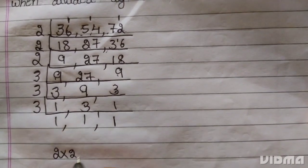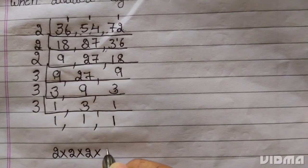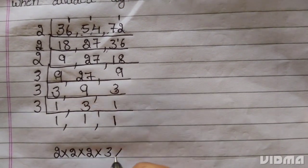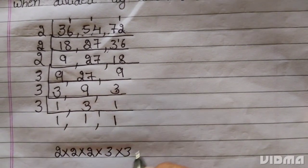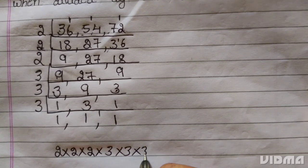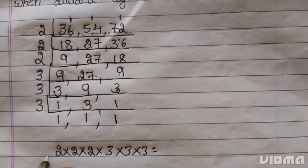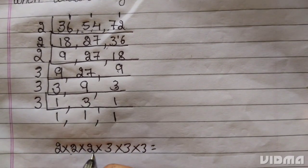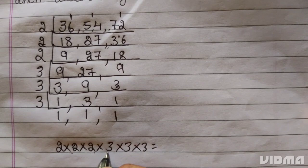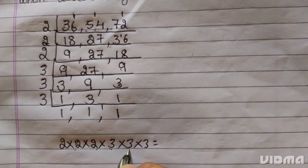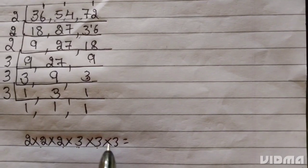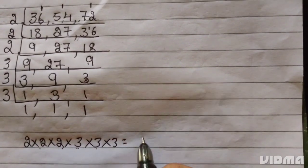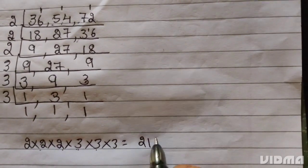2 multiply, 2 multiply, 2 multiply, 3 multiply, 3 multiply, 3 multiply, 3. 2 twos are 4, 4 twos are 8, 8 threes are 24, 72 threes are 216.